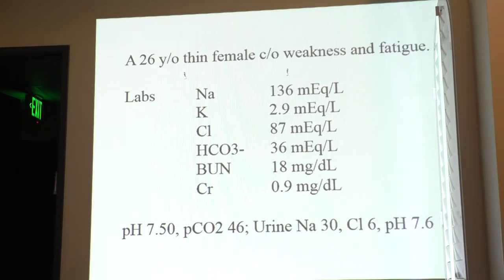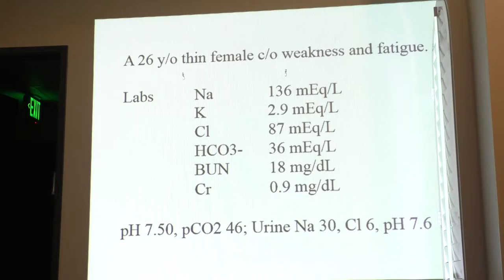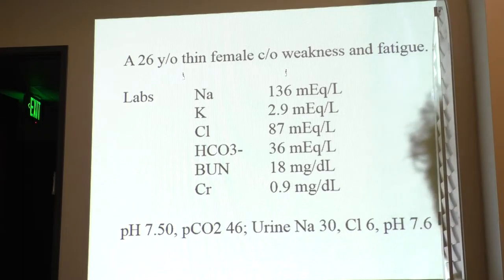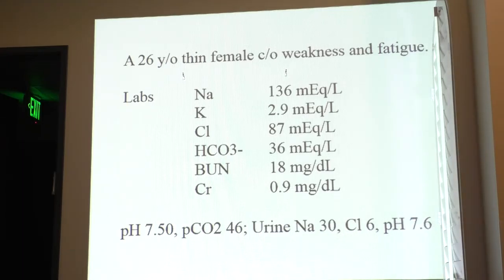Next case: 26-year-old female complaining of weakness and fatigue. Labs: sodium 136, potassium 2.9, chloride 87, bicarb 36, pH 7.50, pCO2 46, urine sodium 30, urine chloride 6. First, bicarb is 36 — high — so it's either metabolic alkalosis or respiratory acidosis. Then pH is 7.50, which is high, so it's metabolic alkalosis.